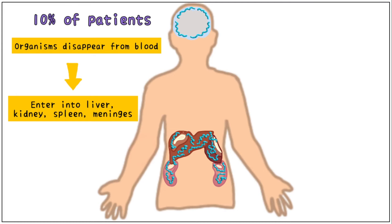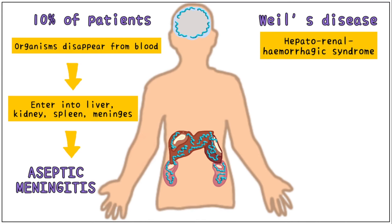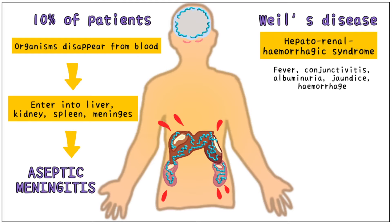Leptospirosis is an established cause of aseptic meningitis. A severe form of Leptospirosis, also called Weil's disease or Hepatorenal Hemorrhagic Syndrome, is characterized by fever, conjunctivitis due to infection of the mucous membranes, albuminuria due to compromise in kidney function, and jaundice as well as hemorrhage due to abnormal liver activity.